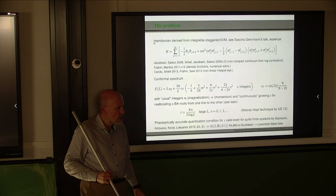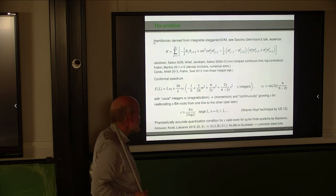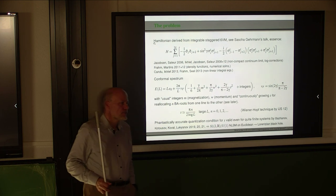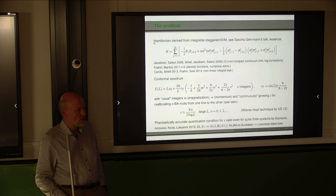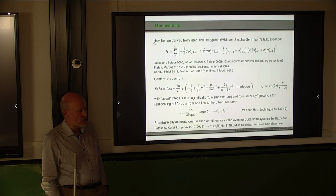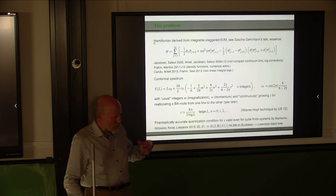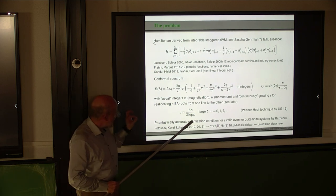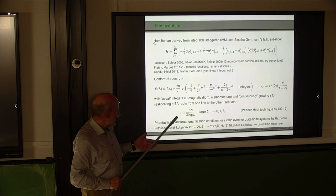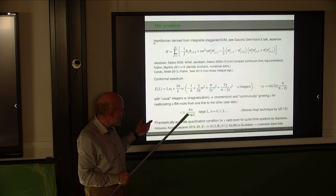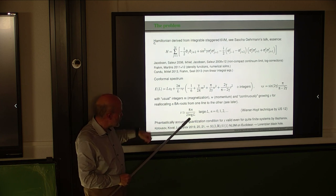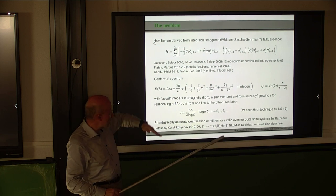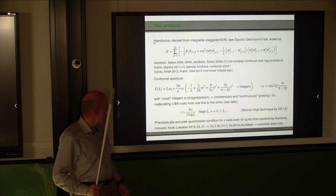This conformal spectrum holds only in one phase of the system, which is between gamma equals zero and gamma equals pi/2. The loss of this property is a phase transition. The leading behavior of S is proportional to 1/log L, and the number of reallocations from one line to another enters as a multiplicative factor.